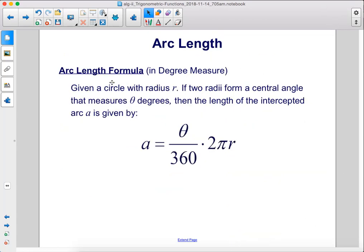Here is the arc length formula. Given a circle with radius r, if two radii form a central angle that measures theta degrees, then the length of the intercepted arc a is given by a equals theta over 360 times 2 pi r.